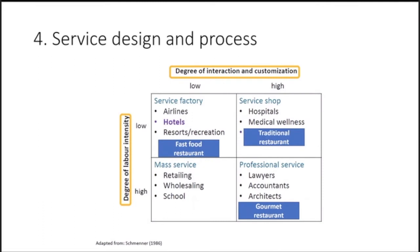The degree of customer customization and degree of labor intensity matter in service design. Low labor intensity and low interaction: fast food restaurants, where you can choose menu items but not really customize the product itself. Traditional restaurants have comparatively low labor intensity but high personalization — you can request dietary adjustments. Gourmet and fine dining restaurants are highest in both — super specific to the customer, very interactive and customizable, which is why people pay a high price.